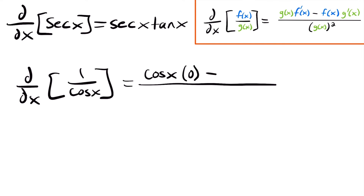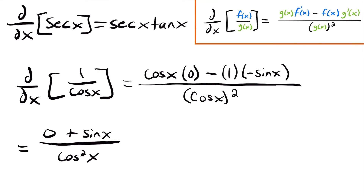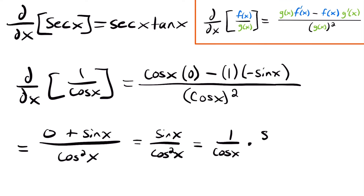Then we're going to subtract our top function, 1, multiplied by the derivative of the denominator. The derivative of cosine is going to be negative sine x. This is all divided by the denominator squared, so we'll have cosine x squared. Simplifying, this will be equal to 0, because cosine times 0 is 0. Then this negative and this negative will become positive, so we'll have sine x divided by cosine squared x. We can split this up into two fractions multiplied together: 1 over cosine x multiplied by sine x over cosine x.